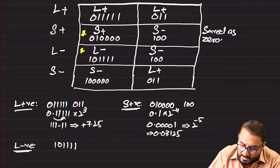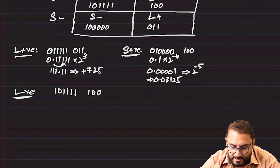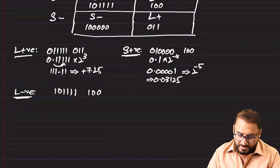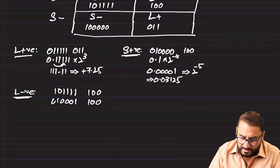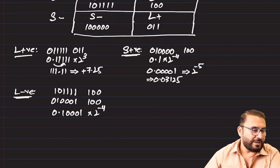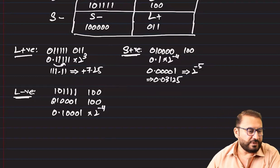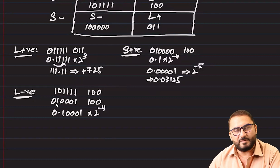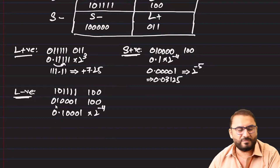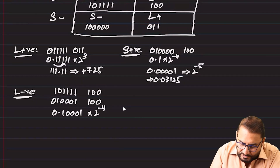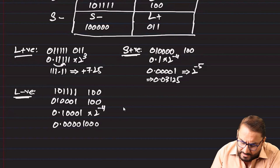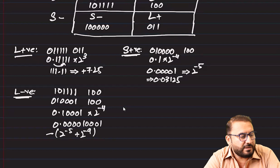For the largest negative number with six-bit mantissa and three-bit exponent, the mantissa is 1.000001 and exponent is 100. Since it's a negative number in two's complement, we first convert to positive form keeping the exponent the same, giving 0.111111. Then in standard form: 0.100001 × 2^(−4). This equals 2^(−5) + 2^(−9), which is negative — but since a calculator is not allowed, leaving the answer up to 2^(−5) + 2^(−9) negative is acceptable.